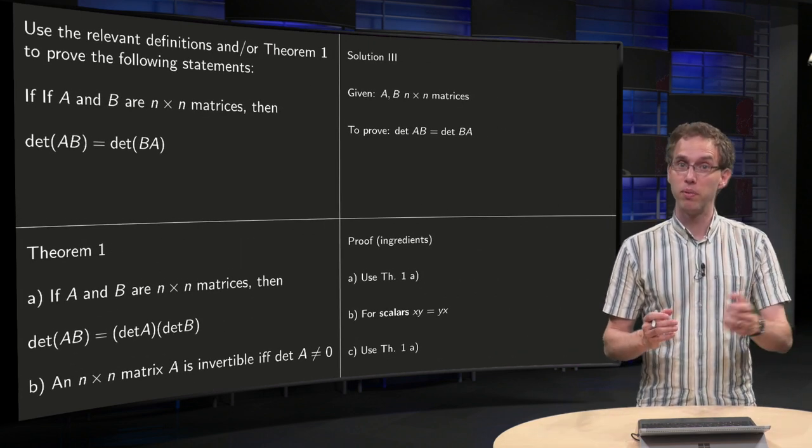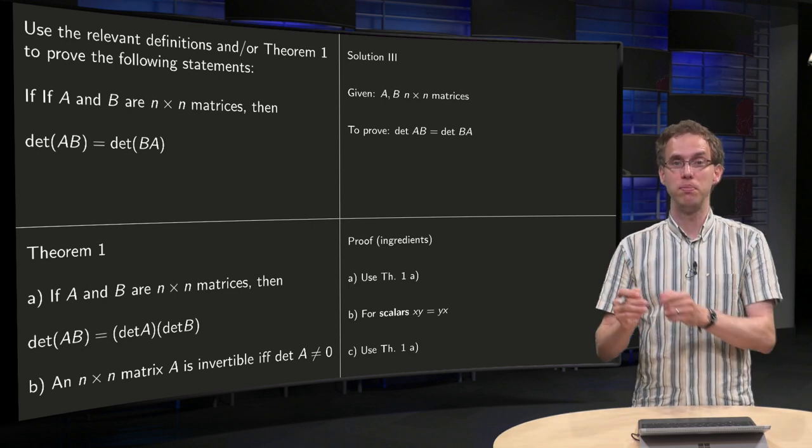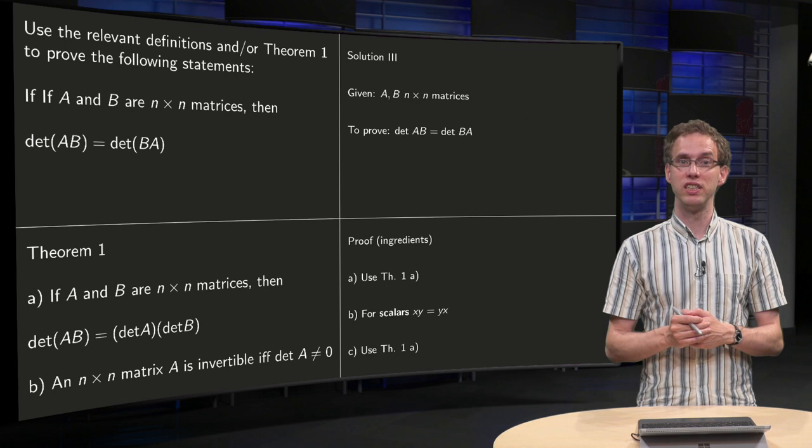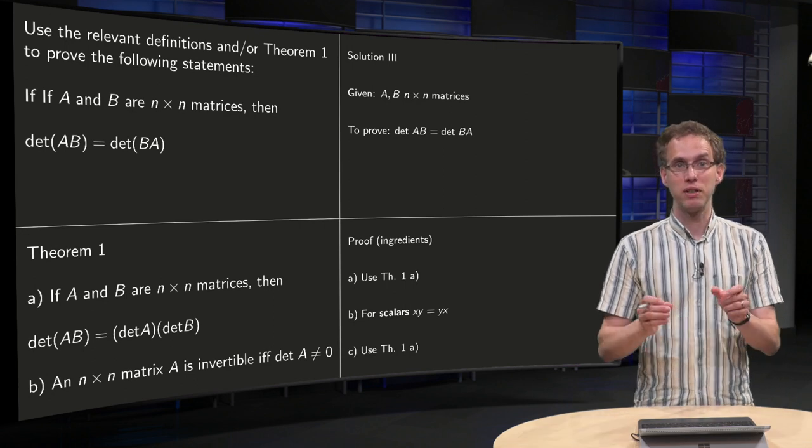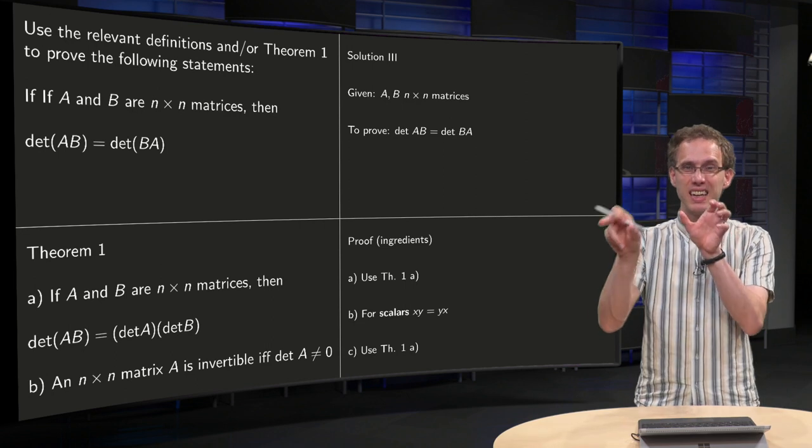You can use theorem 1a, which says that det(AB) equals det(A) times det(B) if you have square matrices. And that's nice, because then you have det(AB) equals det(A) times det(B). But det(A) and det(B) are scalars.